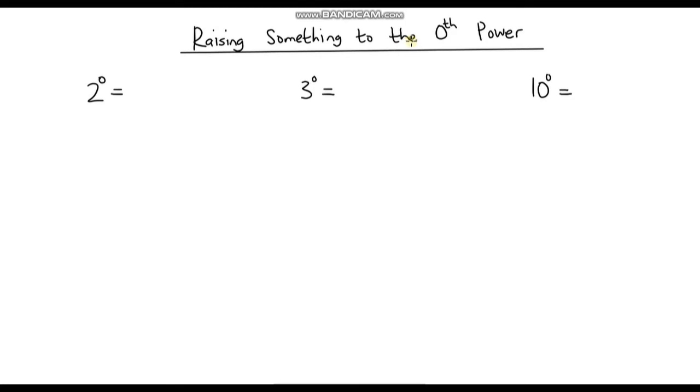Hello and welcome to another video on indices. In this video we're going to be looking at what happens when we raise something to the zero power. For example, what is 2 to the power 0, 3 to the power 0, 10 to the power 0, and in fact anything to the power 0?